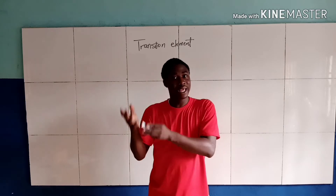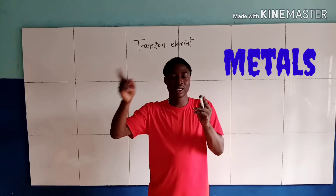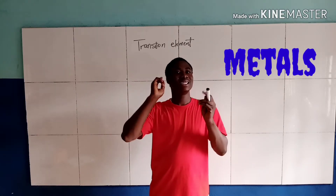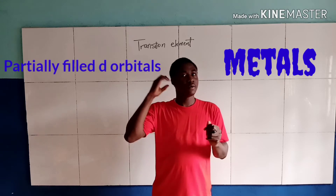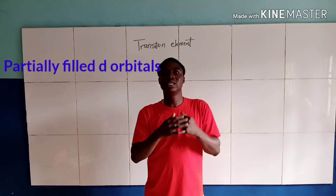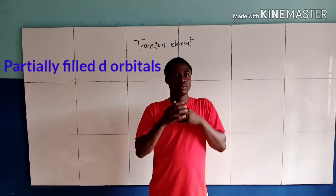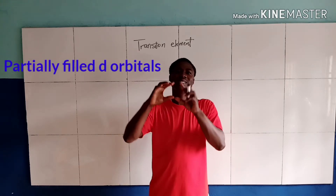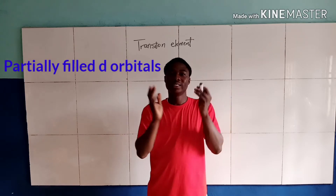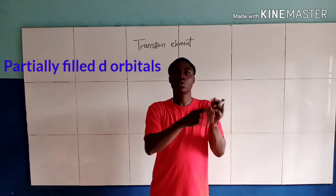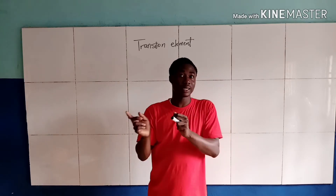So it means that transition elements are all metals, and they have partially filled the d-orbitals. Due to having partially filled the orbitals, they tend to have different characteristics.